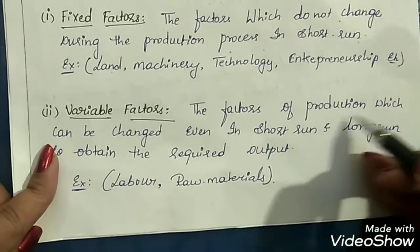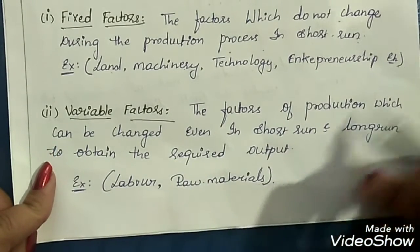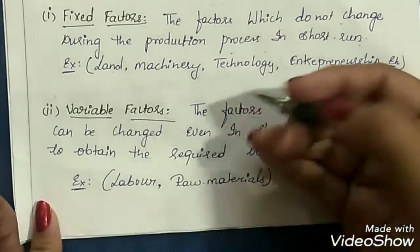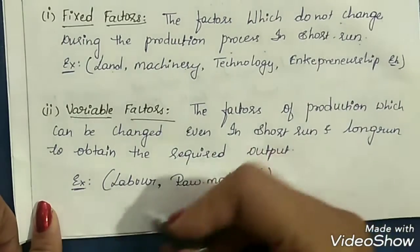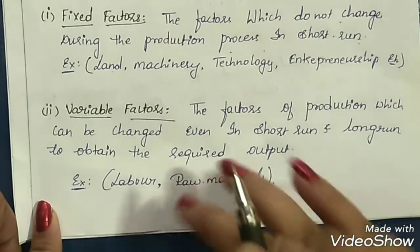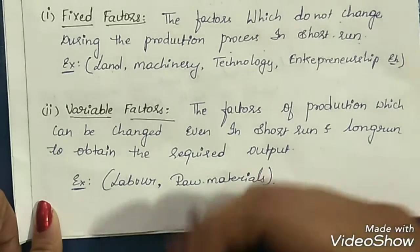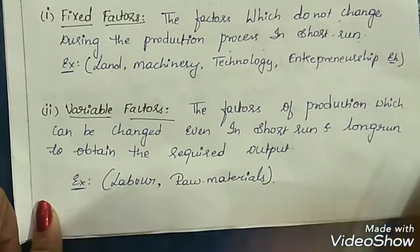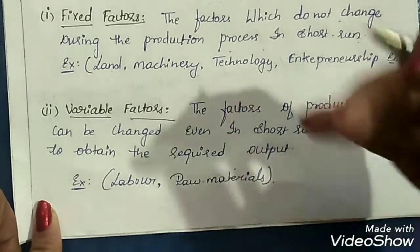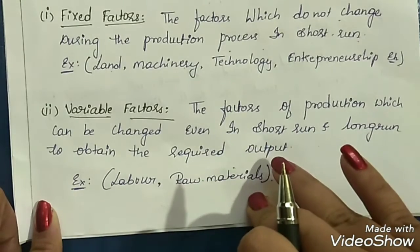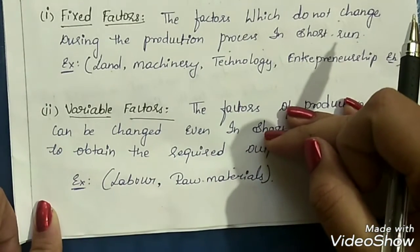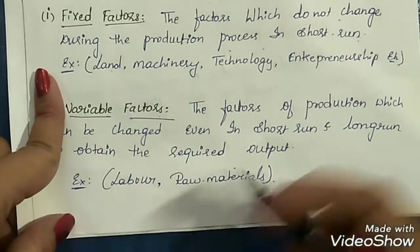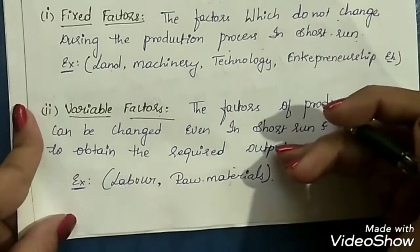Variable factors are the factors of production which can be changed even in short run and long run to obtain the required output. There are some factors which can be changed easily even in the short run, like labor or raw materials. When you increase the labor or increase the amount of raw material, your output will be more. In most cases, only raw material and labor will be variable factors.